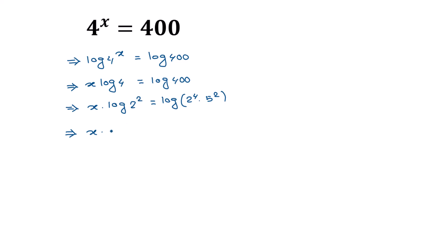Applying the formula log a to the power b again on the left side, we get 2 times log of 2. On the right side, applying the formula log of a times b equals log of a plus log of b, we can write it as log of 2 to the power 4 plus log of 5 squared.